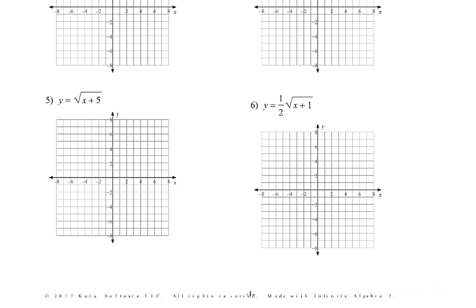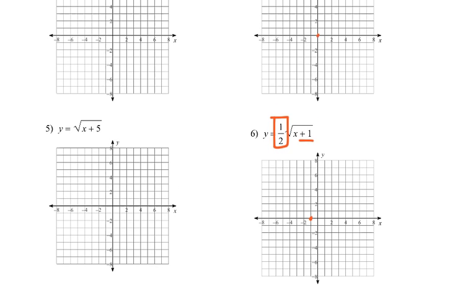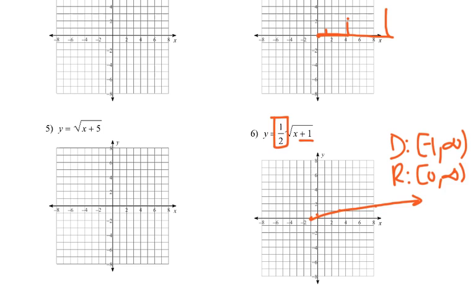Now number 6: this plus 1 on the inside shifts it to the left 1. This 1/2 coefficient means normally we went right 1 and up 1, right 4 and up 2, right 9 and up 3 — but instead, when we go right 1 we only go up 1/2; right 4 we only go up 1; right 9 we go up 1½. It just has a vertical compression. Domain: negative 1 to infinity. Range: 0 to infinity. X-intercept: (−1,0). Y-intercept: (0, 1/2).